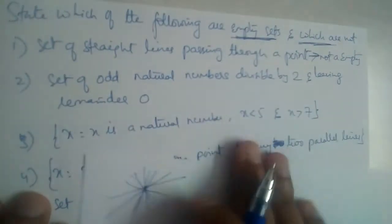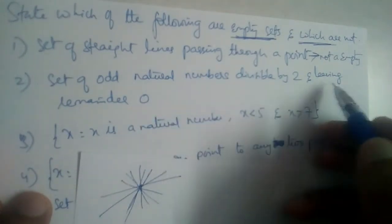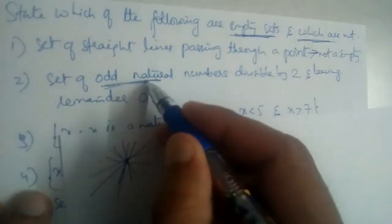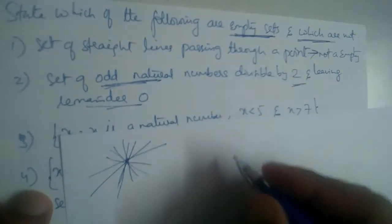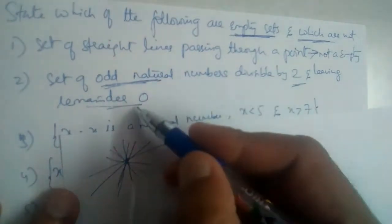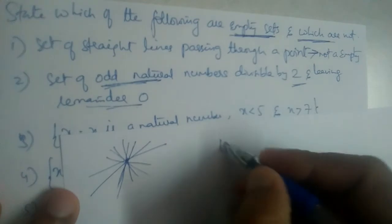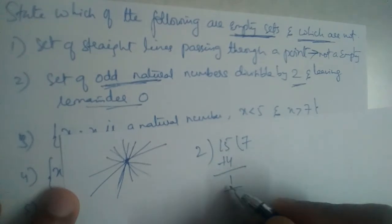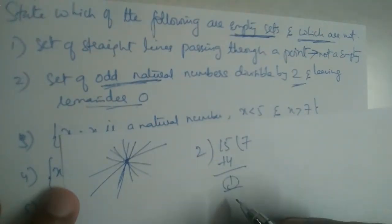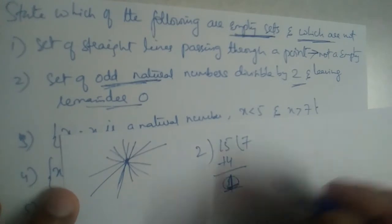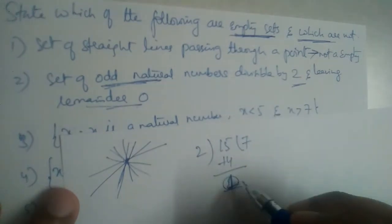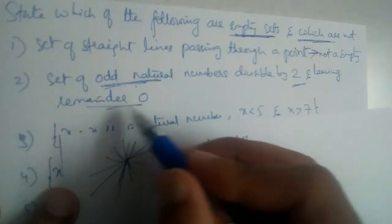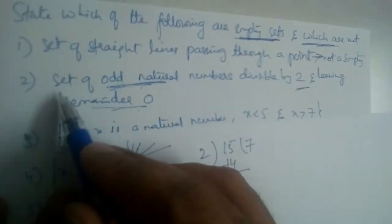Second one: set of odd numbers divisible by 2 and leaving remainder 0. We should divide odd numbers by 2 and the remainder should be 0. Can we have odd numbers which leave 0 when divided by 2? Take 15 — divide by 2: 14 remainder 1, not 0. You take any odd number, divide by 2, remainder will always be 1. So this is an empty set.